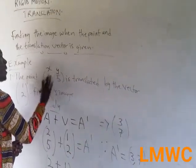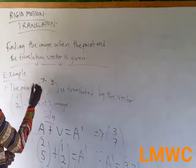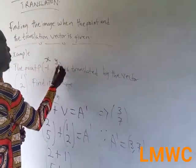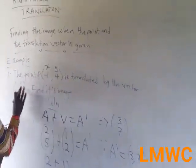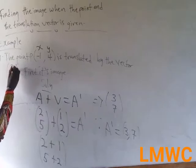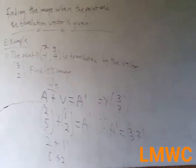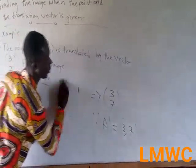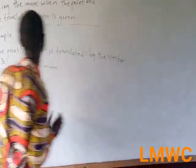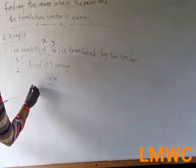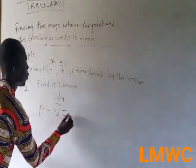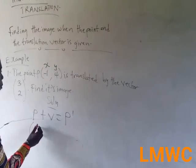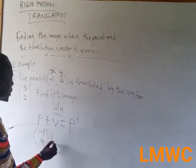Let's do the same thing with different coordinates. This is P, at negative 1, 4. And the translation vector is (3, 2). You add the numbers at the top. It becomes negative 1 plus 3, and 4 plus 2.